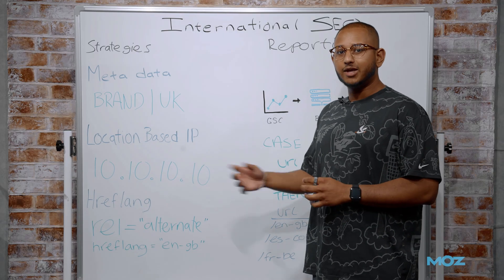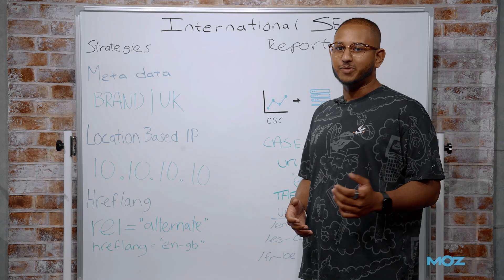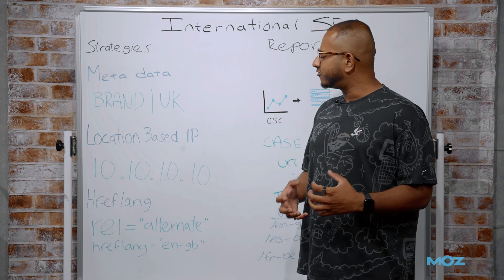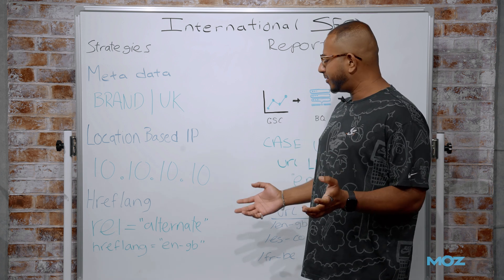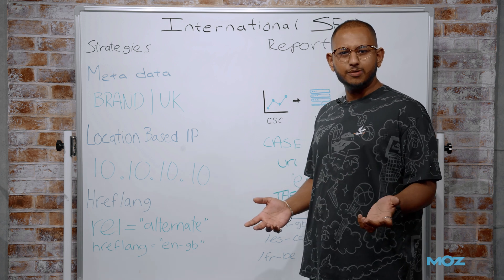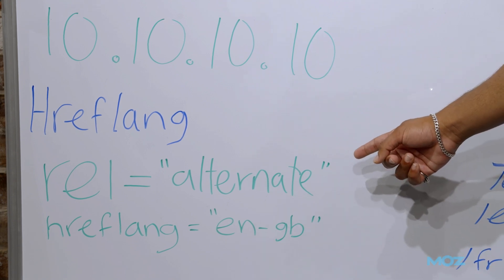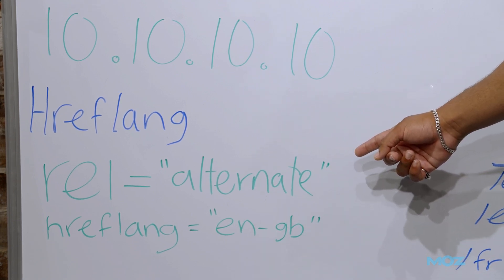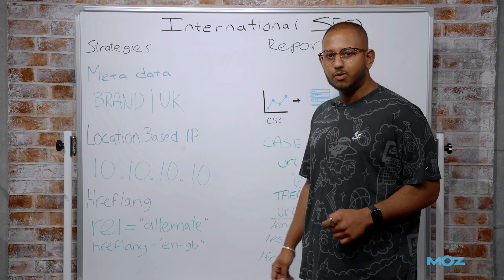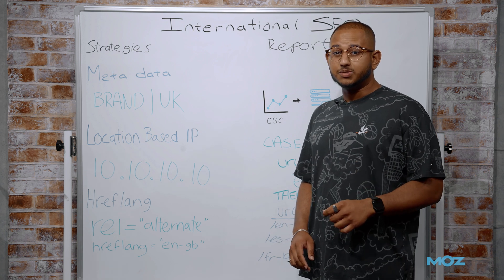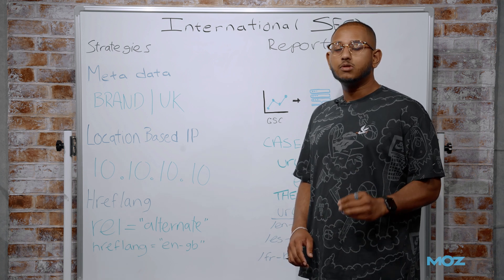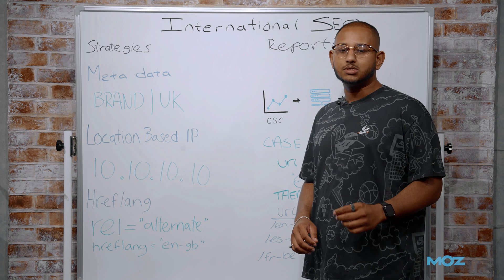And finally, hreflang. Probably the method we're all familiar with and all dread when we're here. From an SEO perspective, it's quite simple, right? It's just a HTML tag. We're just telling Google, look at my URL. That's the country I want. But from a development perspective, it can become a real challenge depending on the complexity of your websites.